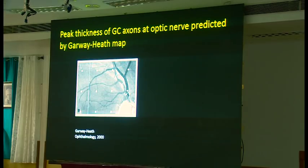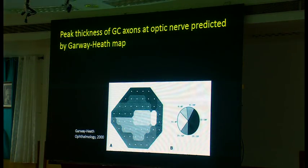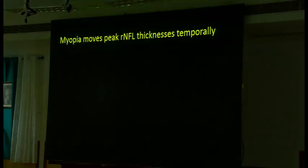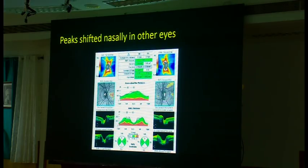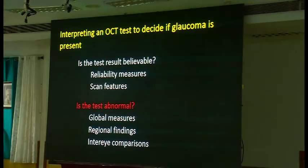We are also inferring where the peaks of ganglion cell axon thickness should be based on the Garway-Heath map. Ted Garway-Heath looked at where nerve fiber layer defects inserted into the optic nerve head and generated a map creating a correspondence between the edges of the optic nerve head and areas within the visual field. Unfortunately, myopia tends to move RNFL thicknesses temporally — and sometimes nasally — so the actual tissue is not where the machine expects it, making something look abnormally thick or thin not because there's more or less tissue, but because of where it arrives at the optic nerve head.